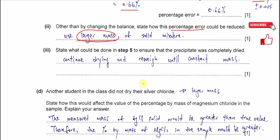Part C3: state what could be done in step five to ensure all the precipitate was completely dry. The standard approach is to dry the solid for several hours, take it out and measure the mass, then dry again and measure again to check whether it has reached constant mass. This ensures all water has been removed. So the answer is: continue drying and re-weighing until constant mass is achieved.